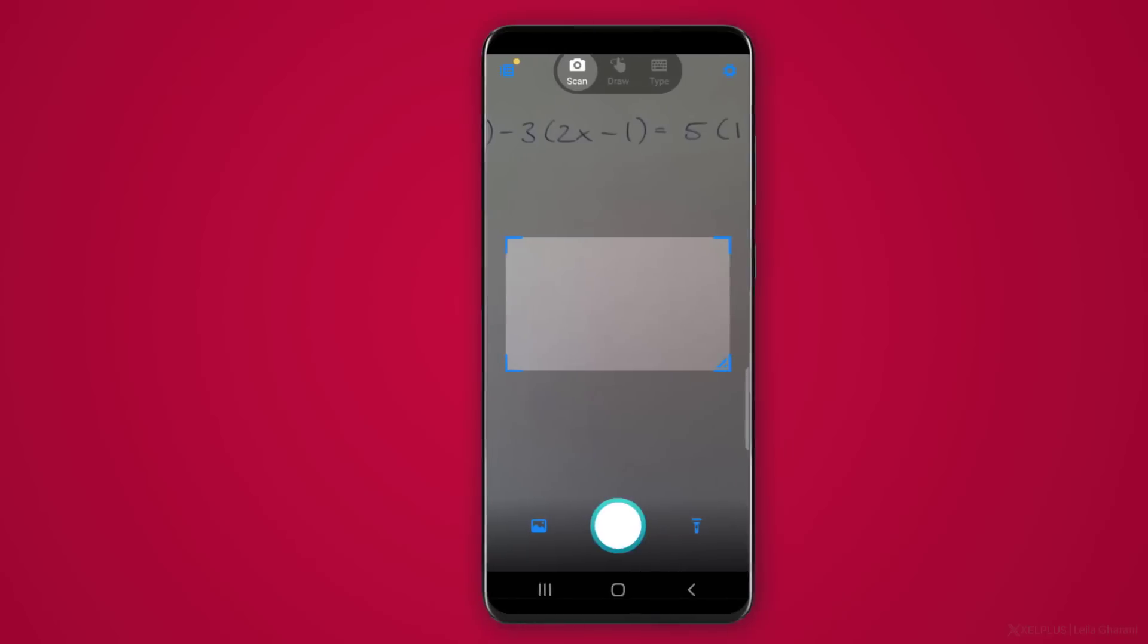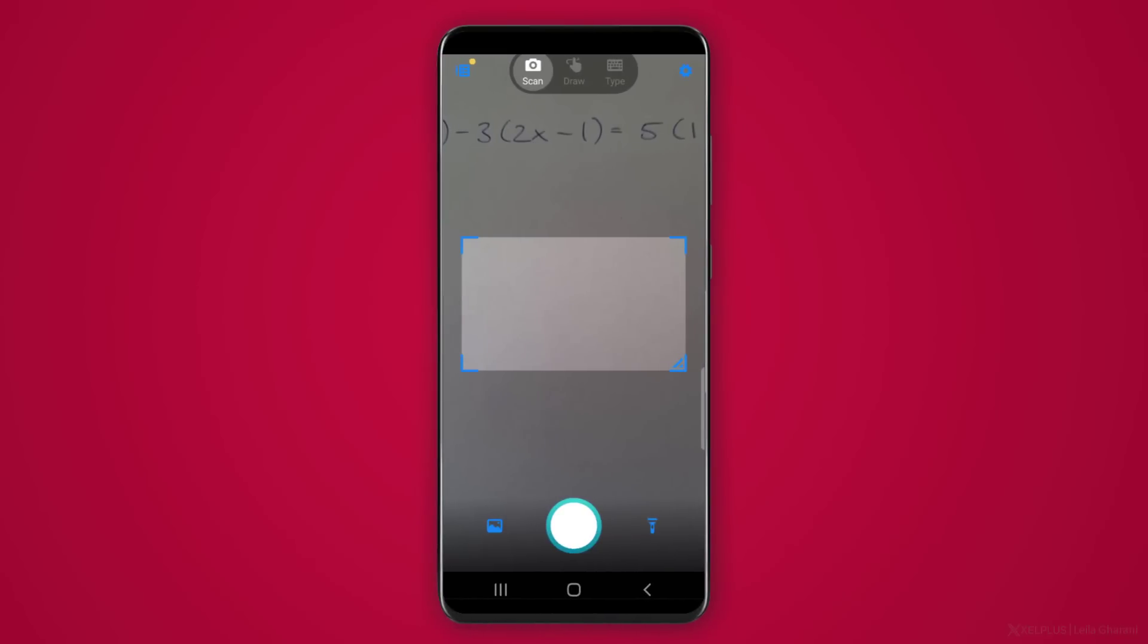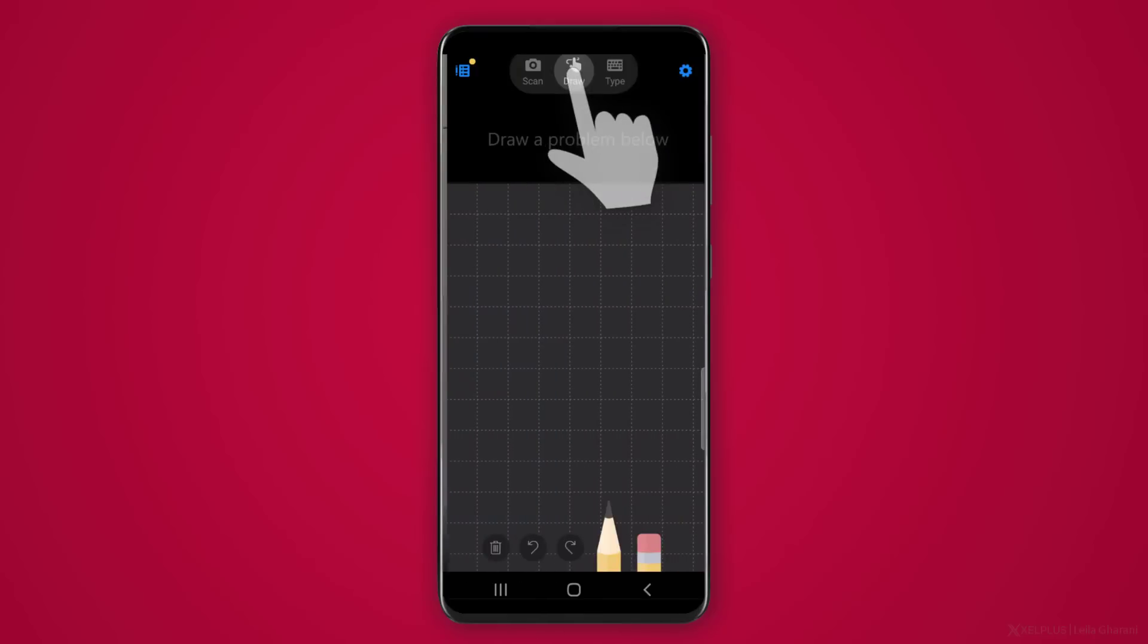Pretty amazing, right? Another option you have is to draw and sketch your problem. So let's select draw from the menu here, and then I'll just sketch my equation, and it's going to convert it.